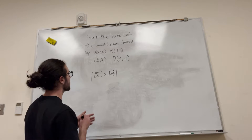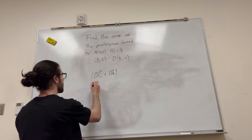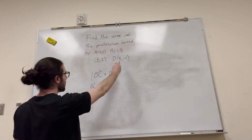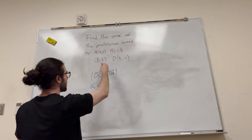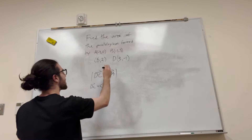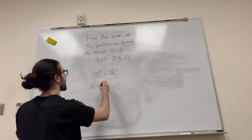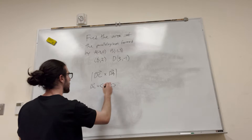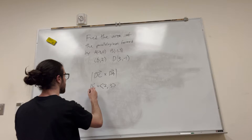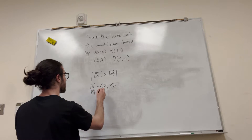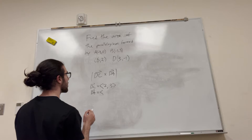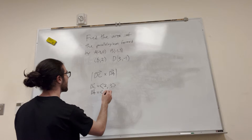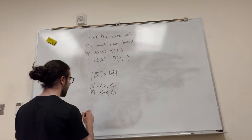DC is going to be equal to (2, 3, 0), and DA is going to be equal to (-6, 1, 0). Right?